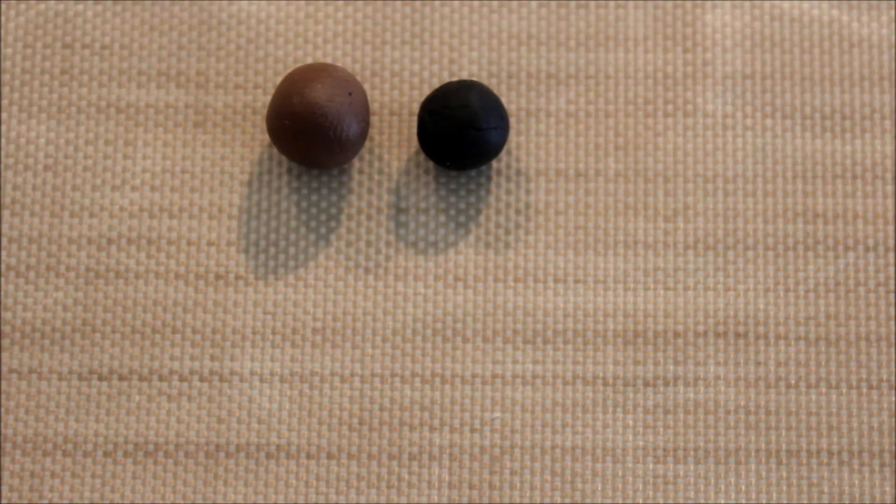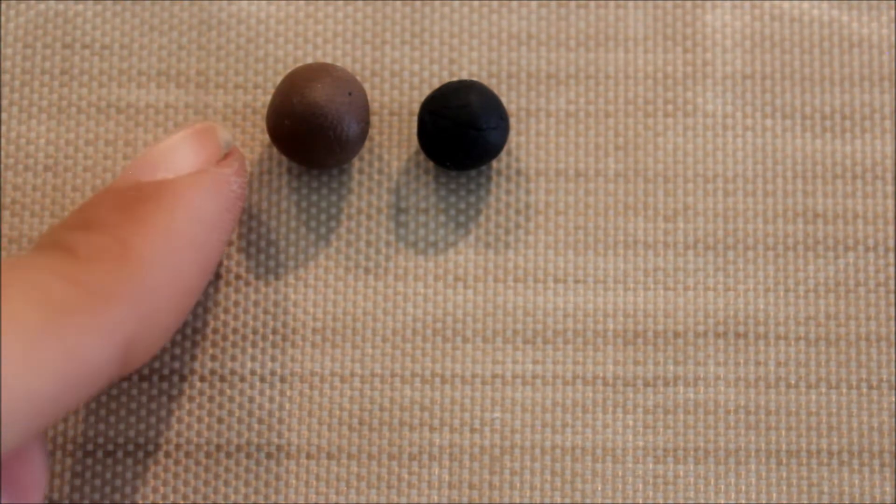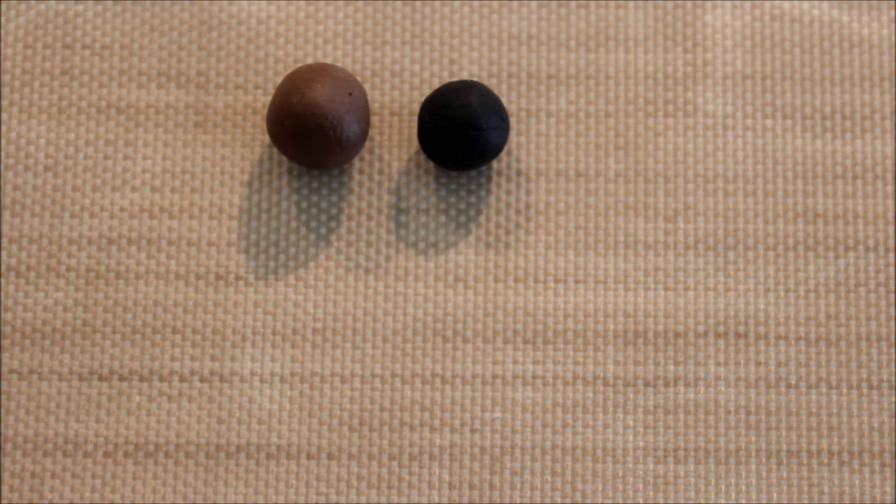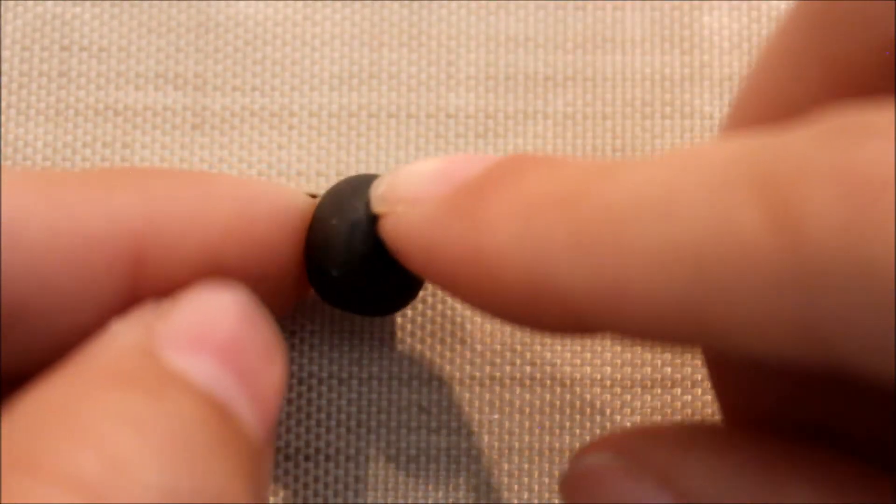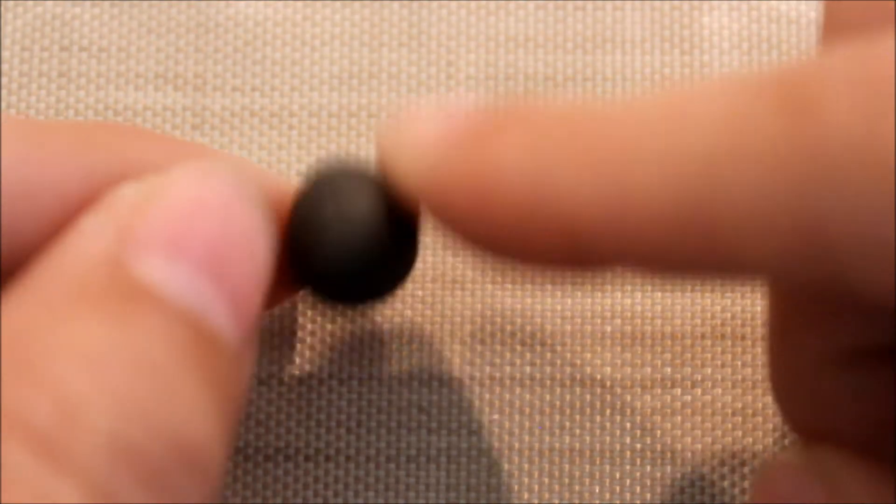So to make the chocolate cookie, you're going to need a dark brown color. And to get that, I'm just going to mix this brown right here with some black clay. And this is the color that you're aiming for. It's just a really, really dark brown color.